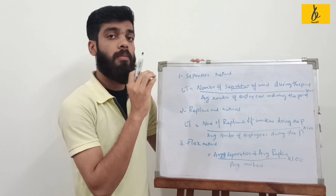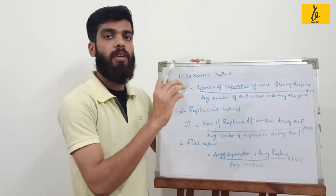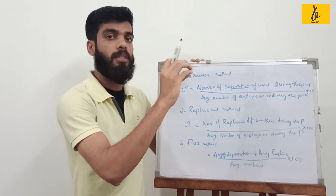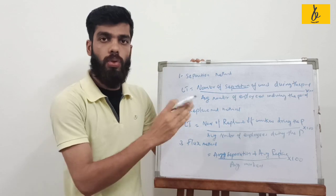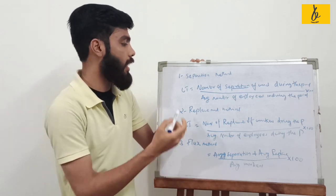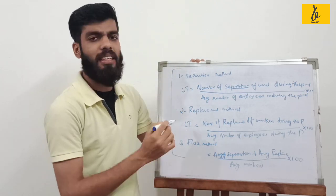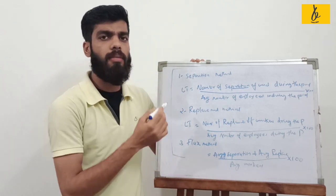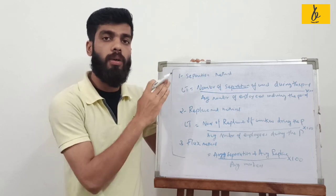Average number of employees equals number of employees at beginning plus number of employees at end of year divided by two. The percent average number of employees in the same year.